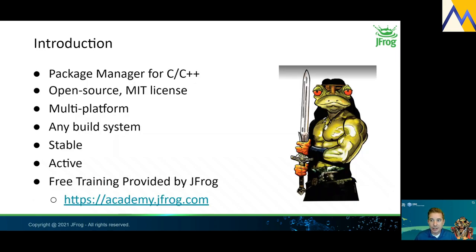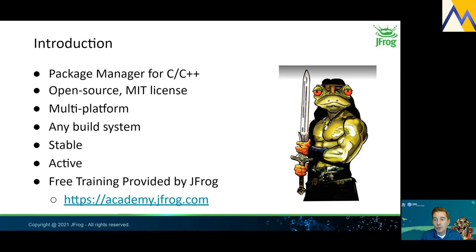Before we start doing examples, I want to provide a brief introduction to Conan. Conan is a package manager for C and C++. It is open source and published with an MIT license. It is multi-platform, meaning it can run on Linux, Windows, macOS, and anywhere else Python can run. Conan is stable — there are no breaking changes within major versions, meaning packages built with any Conan 1.x version will continue to work with all future Conan 1.x versions. Conan is also designed to support all popular build systems in C and C++, as well as custom build systems.